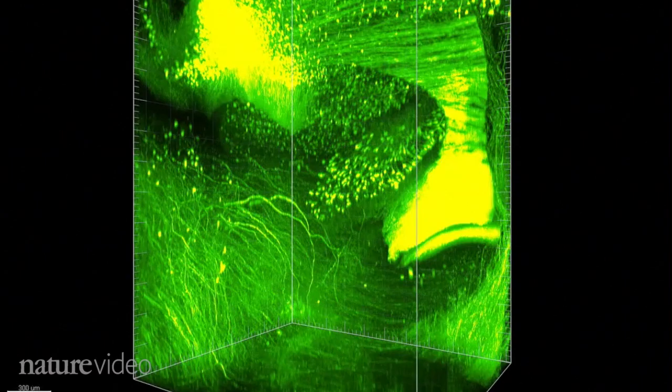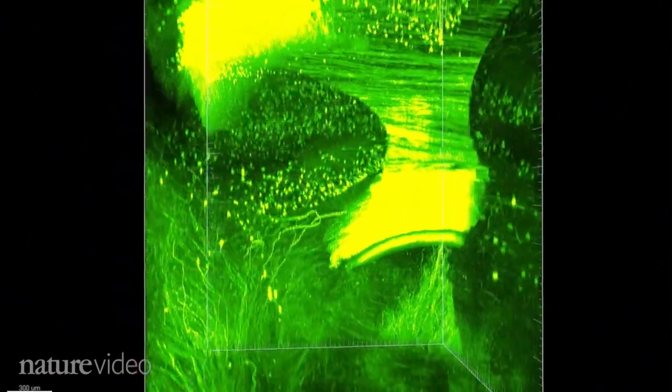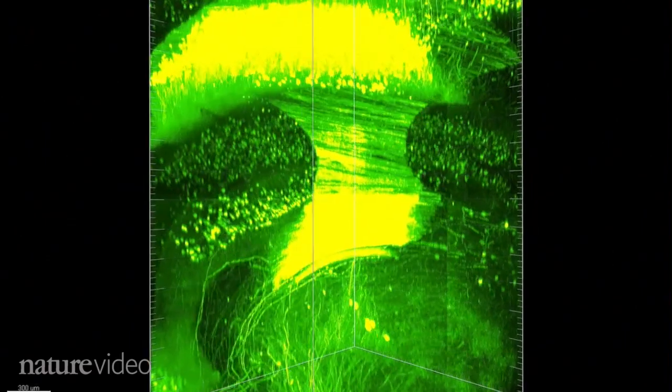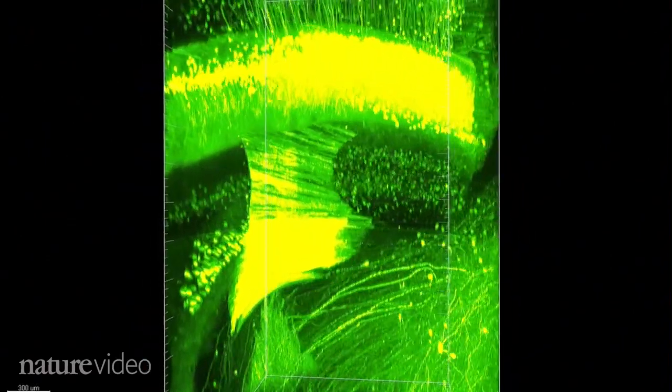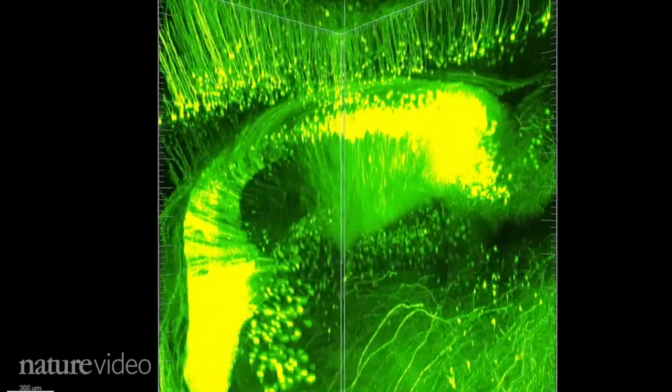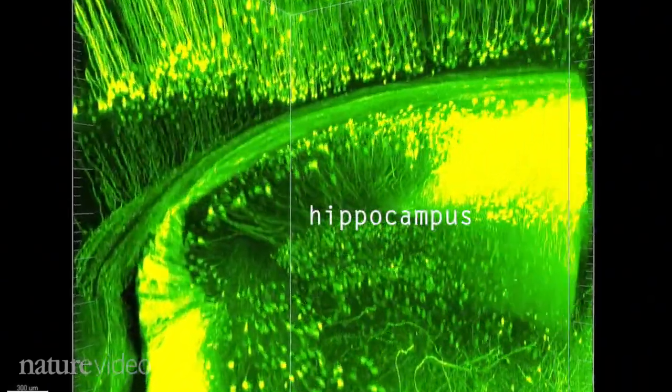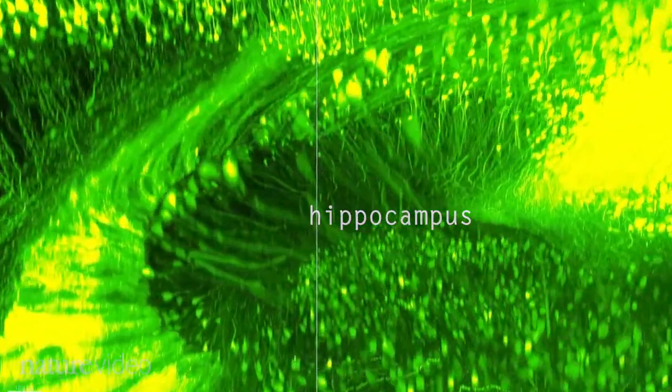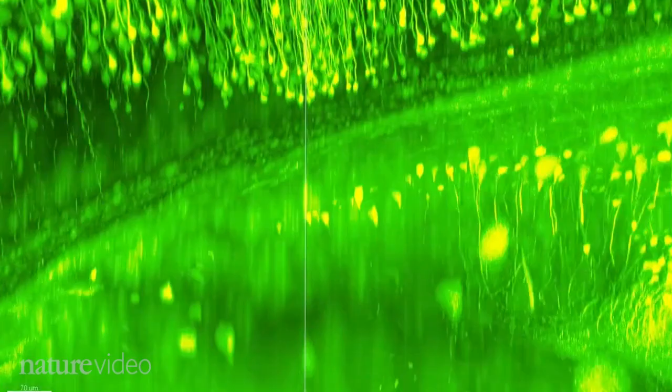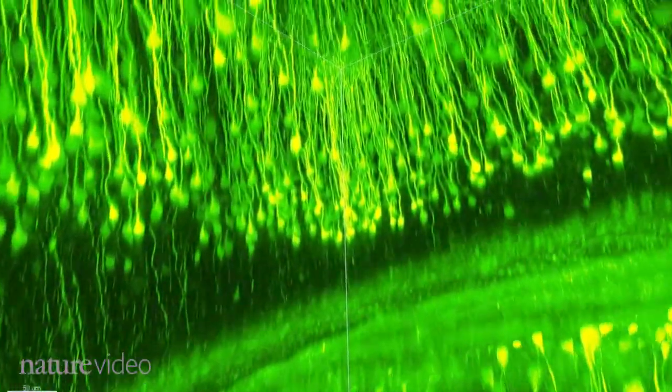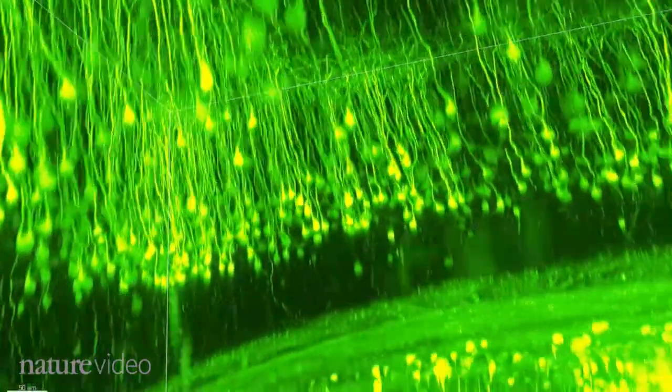We're heading into the center of a mouse's brain, into the hippocampus where memories are formed. Looking up, you can see neurons projecting to the surface of the brain.